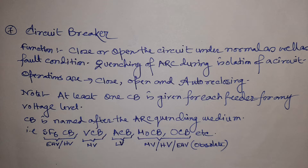MOCB and OCB are obsolete nowadays. ACB is used for LV systems; VCB is used for MV systems such as 3.3 kV, 6.6 kV, 11 kV, and 33 kV. SF6 circuit breakers are used for 33 kV and above. There is also the air-blast circuit breaker used for high-voltage and extra-high-voltage outdoor switchgear, though it is rarely used today. SF6 has been found to be the most reliable and most widely used circuit breaker.